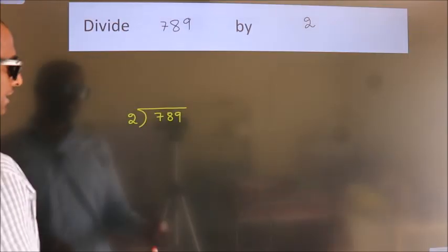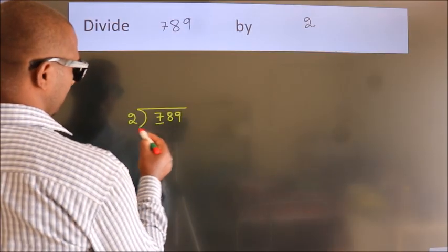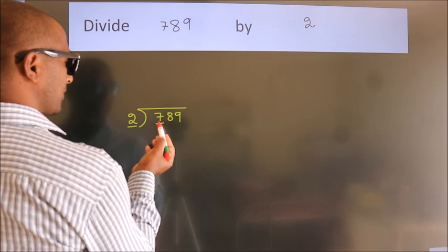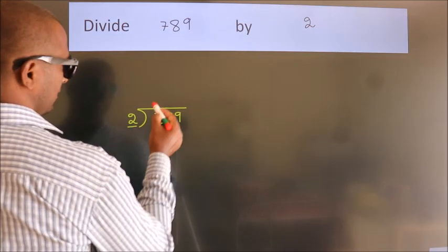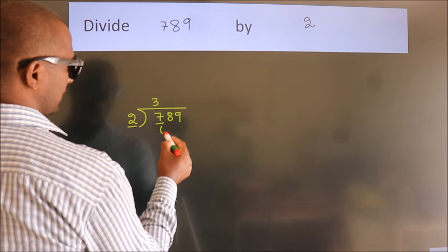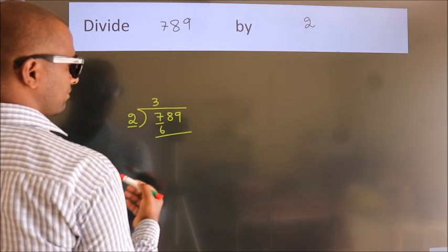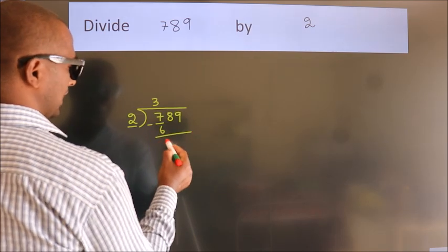Next, here we have 7, here 2. A number close to 7 in 2 table is 2 threes, 6. Now we should subtract. We get 1.